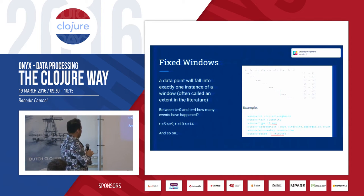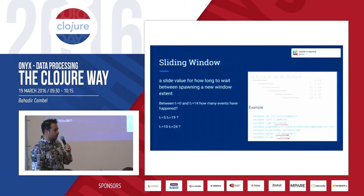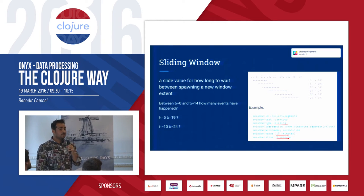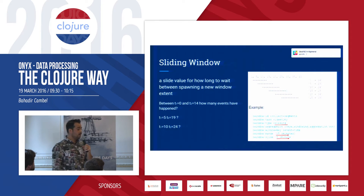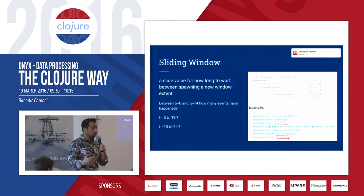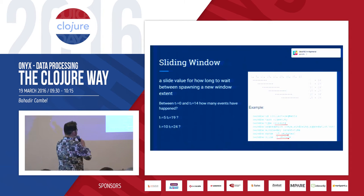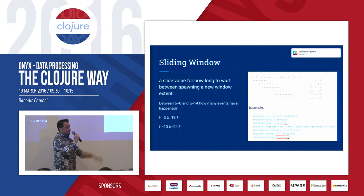You can also do a sliding window. For example: how many registrations happened in the last 10 minutes? One minute later you can ask the exact same question, and again and again. Onyx does the calculation for you. Here we define a range of 15 minutes and a sliding window of 5 minutes. The windows slide every 5 minutes and new numbers come in.